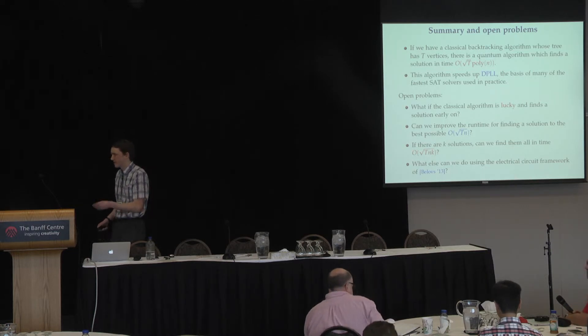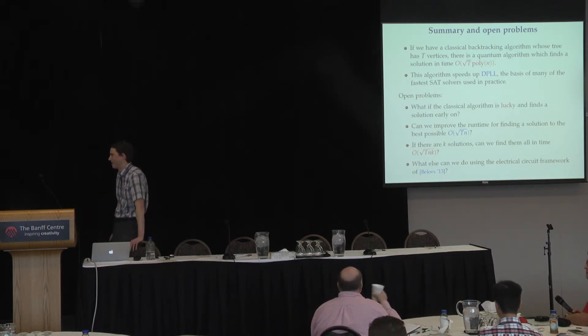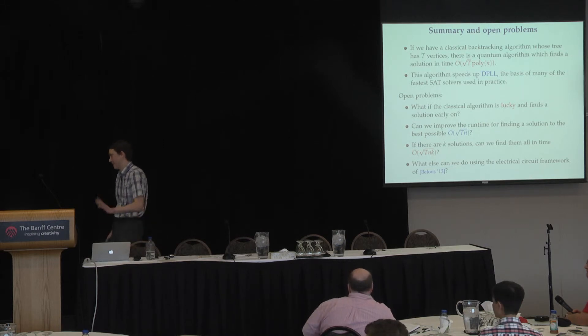For example, the tree is only defined as the classical algorithm explores it. It could be very unbalanced, and then you don't know how to proceed. That's what stops you from applying that approach.